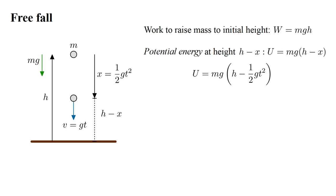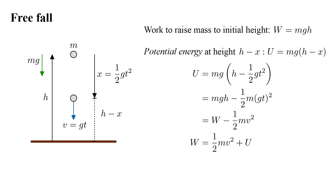Substitute one-half g t squared for x, then distribute the mg factor. We get u equals mgh minus one-half m times (gt)². The first term is the work we did to set up the experiment. In the second term, substitute v for gt. Rearranging, we have w equals one-half mv² plus u.